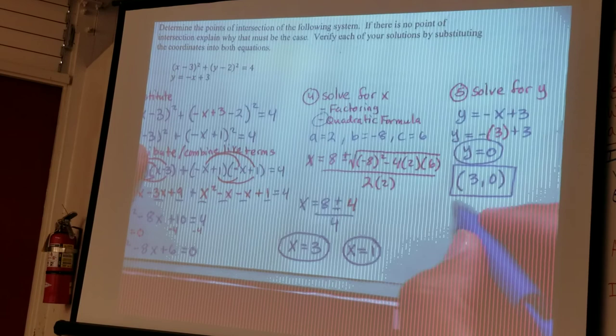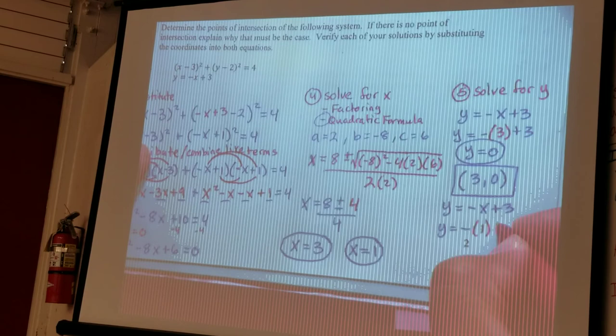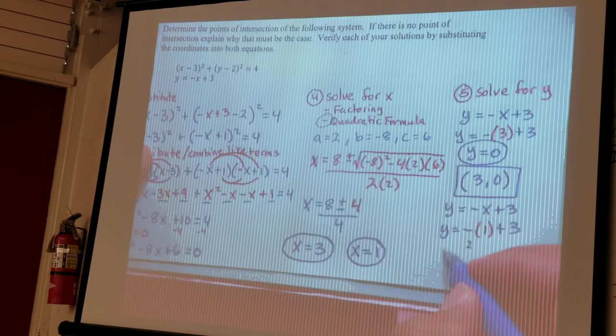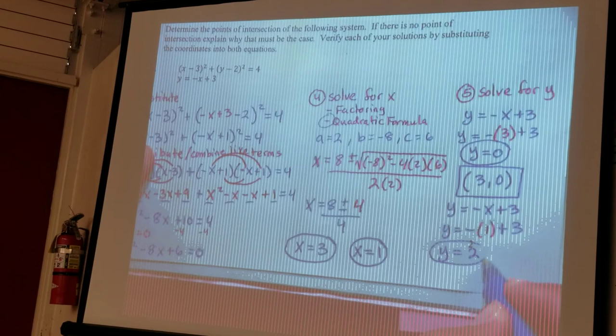Then I do it again for the other x coordinate, x equals 1, so y is equal to negative x plus 3, I'll substitute in the 1. Negative 1 plus 3 is y equals 2. And this is now our y coordinate, so our final answer here is when x is 1, y is 2. So our final answer for question 6, the two coordinates are 3 comma 0 and 1 comma 2.